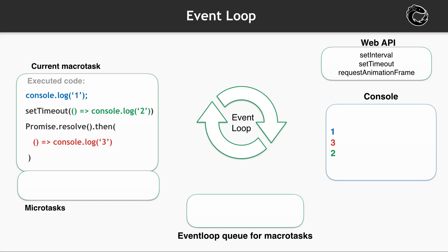Let's take a look at the executed code to the left. We have three console.log calls here. The first is unwrapped. The second is wrapped in setTimeout, and the third is called in a promise resolve callback. As you see in the browser console, the first unwrapped console.log is executed, then on second place we have console.log from the promise callback, and on third place we have console.log from setTimeout. Why?